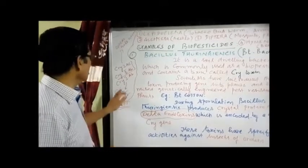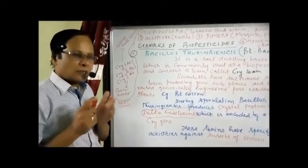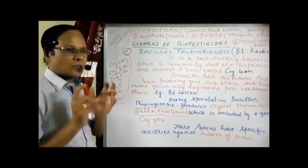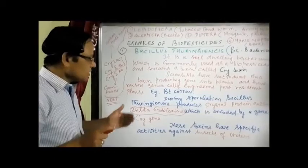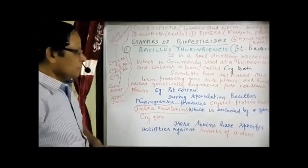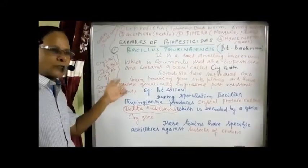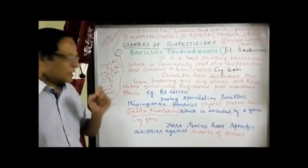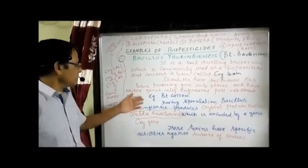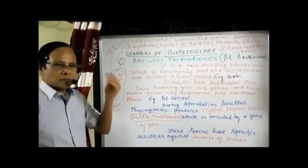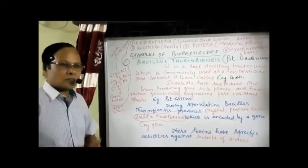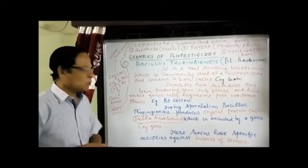We have different CRY genes for different organisms; their effect is to produce a toxin to kill a particular insect pest. These toxins have specific activities produced by different genes. There are 29 orders of insects, and these toxins work against some of those orders. According to the book, there are four orders whose insects are controlled by delta endotoxin.